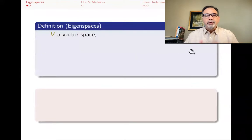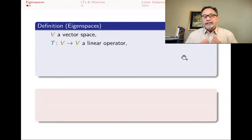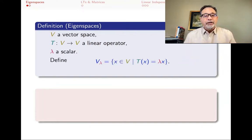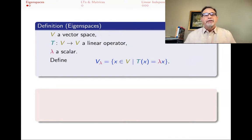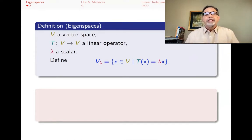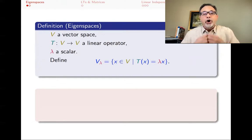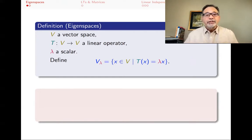Let's get started. An eigenspace begins with a vector space and a linear operator — a linear transformation from the vector space to itself — and you pick a scalar lambda. You define V sub lambda to be all the vectors in V such that T of x is lambda x. This looks like the definition of an eigenvector, except x could also be zero, since T of zero is always zero, and that always equals lambda times zero regardless of what lambda is.